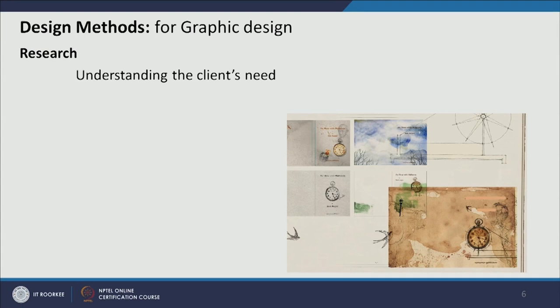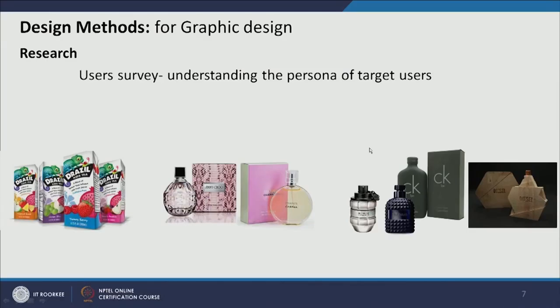For example, when dealing with a particular client, multiple variations of design can be given. There can be a single theme from which a color palette and all these images can be evolved. Here the theme was peace and Gandhiji — the chakra and birds symbolizing peace — some elements were taken from that theme and multiple variations of design were generated and discussed with the client.